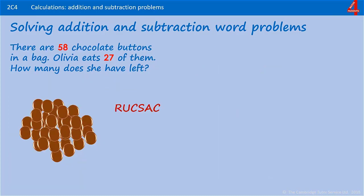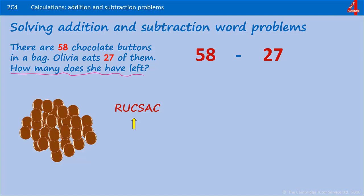Using Rucksack to solve this one. Start by reading the question. There are 58 chocolate buttons in a bag. Olivia eats 27 of them. How many does she have left? Understanding what this is asking us to do — we are asked to find how many chocolate buttons she has left. When we are choosing our operation, the clue in 'how many she has left' is that we are subtracting. We started with 58 and taking away 27.